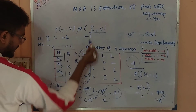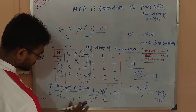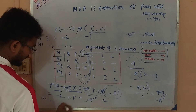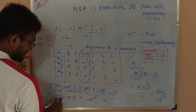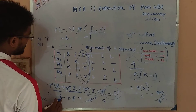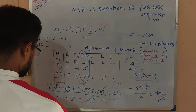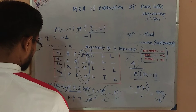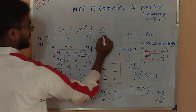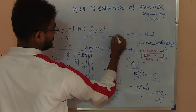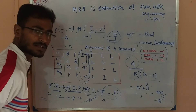Continuing the calculation: minus 1 plus minus 1 gives minus 2; adding across the columns — 2, 3, minus 1, plus minus 1 — and summing all pair scores: 2, 2, 4, 2, 4, 2, 2, 4, 2, 6 — the final Sum of Pairs score for this example comes to minus 7.